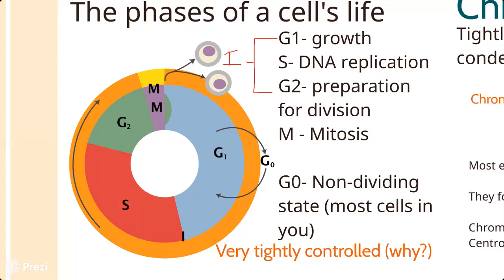At the end of interphase you have the M phase for mitosis (or meiosis - we'll focus on mitosis for now). Mitosis is further subdivided into four or sometimes five phases - prophase, metaphase, anaphase, and telophase (PMAT), with pro-metaphase sometimes listed as a fifth phase. Then the whole process repeats.